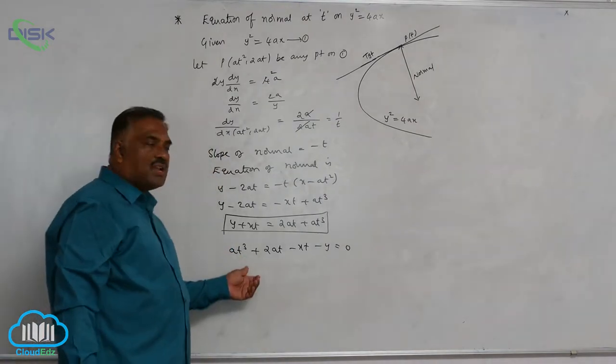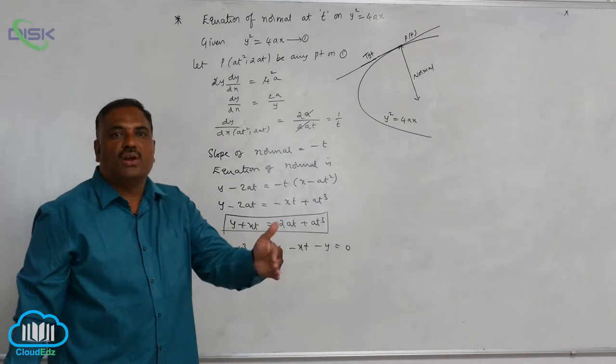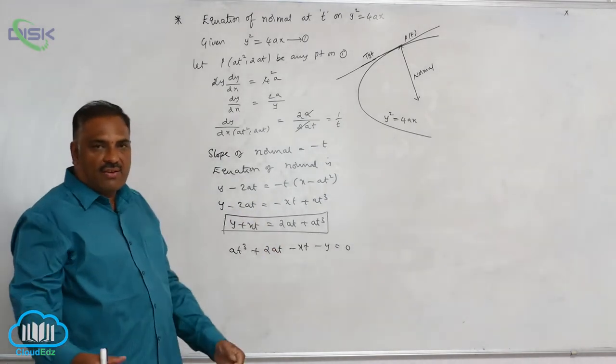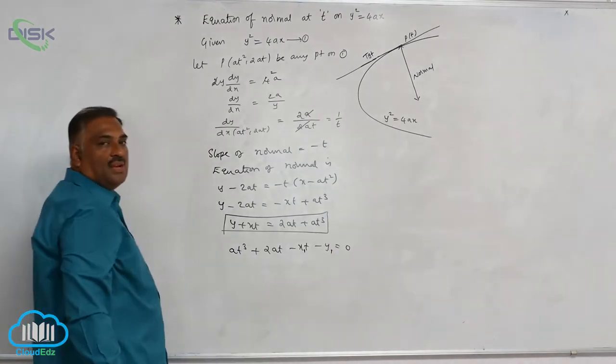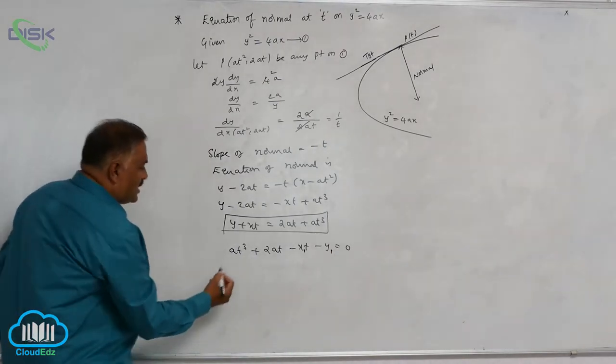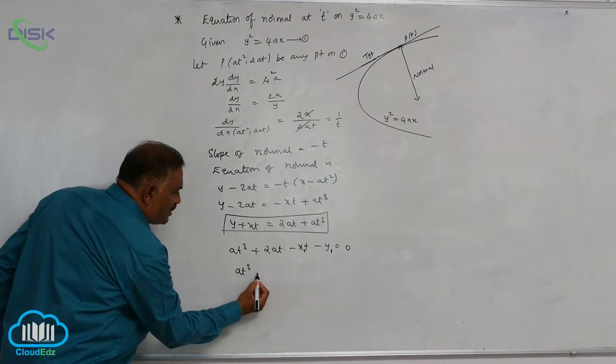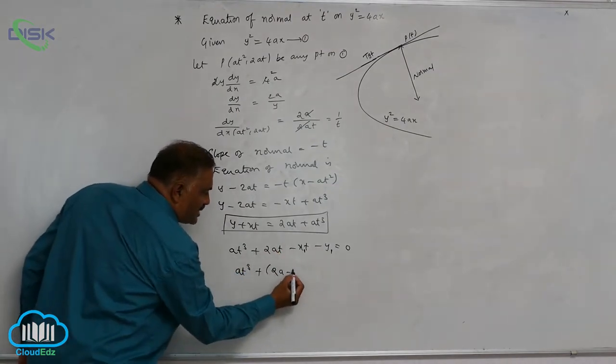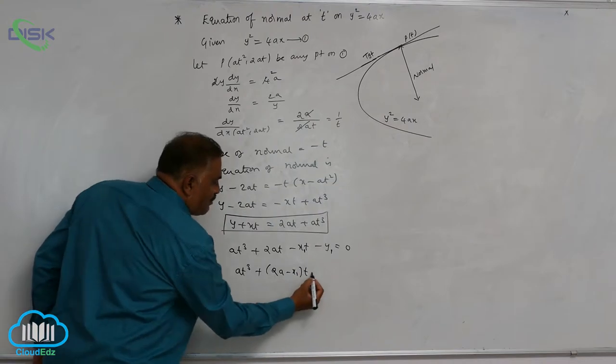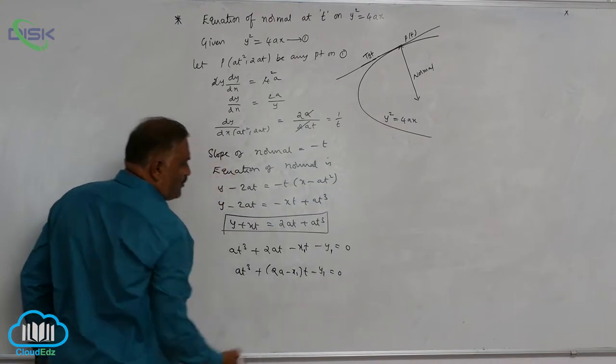Assume that the given normal passes through some point x1 comma y1. Wherever x and y is there, you can write x1 y1. Now rearrange the terms: at cube plus 2a minus x1 into t minus y1 is equal to 0.